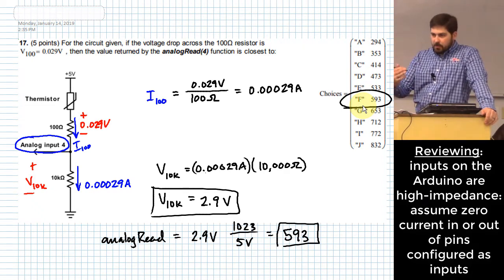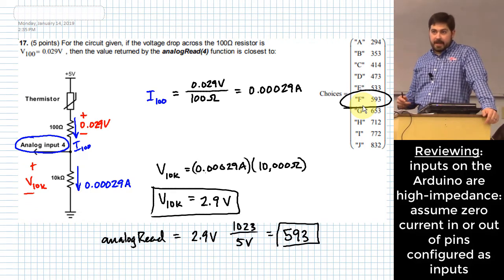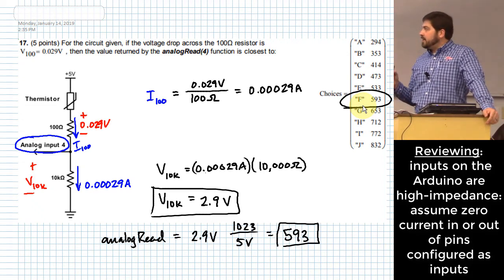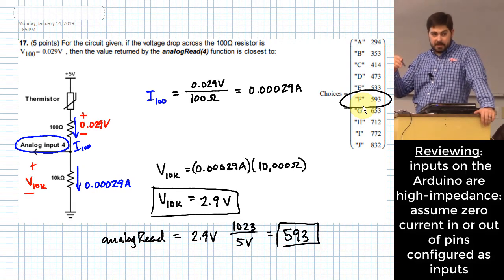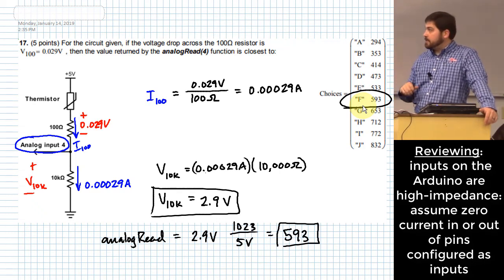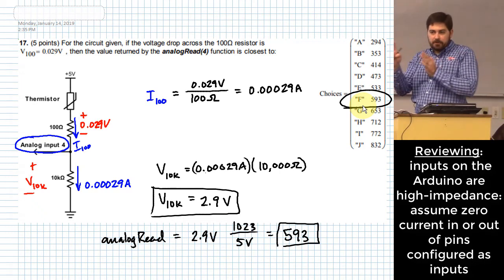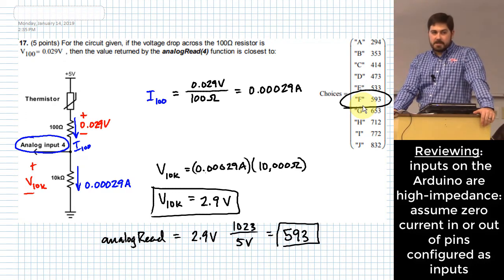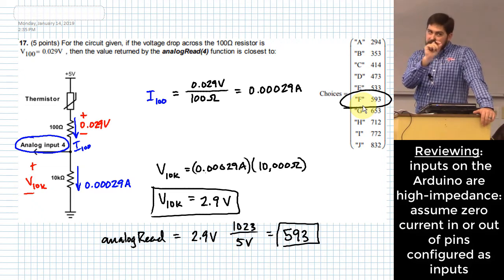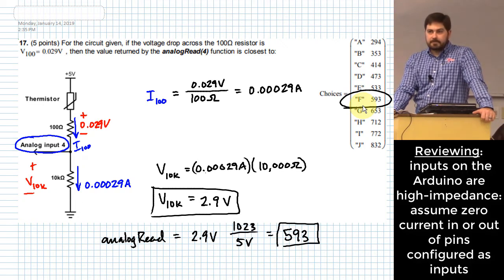The question was you'd have to know that no current was leaving off of that little leg that went into analog input 4. That is correct. You need to know that. And so in case you hadn't seen that yet, just understand that when you configure the input pins of any of the input pins of your Arduino, if any of them are configured as inputs, your presumption on problems like this is that they are high impedance inputs which allows you to set the amount of current flowing on those to negligible.